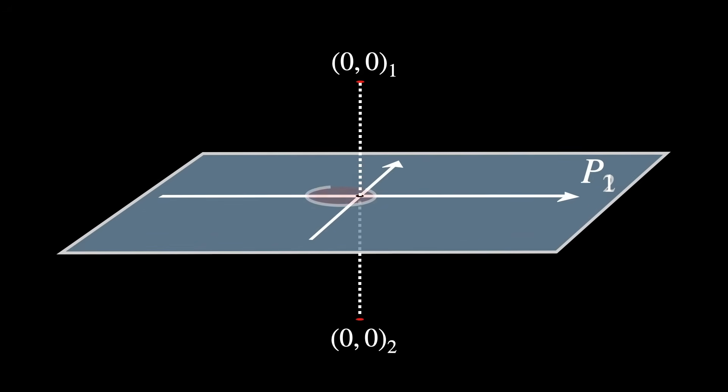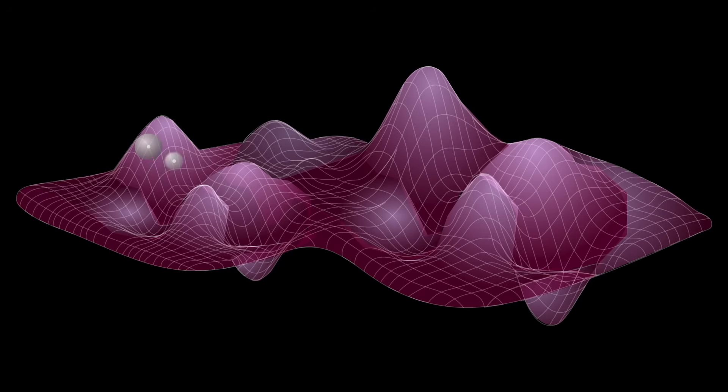Let's try to create two open disks, or neighborhoods, around 0₁ and another around 0₂. The problem is, no matter how small the disks are, they will always share all the same points except the origin, so the disks always overlap. This makes it impossible to separate the origins with non-overlapping open sets — in other words, the space is not Hausdorff. Every Riemannian manifold must be Hausdorff, so you have to be able to separate distinct points using open neighborhoods.